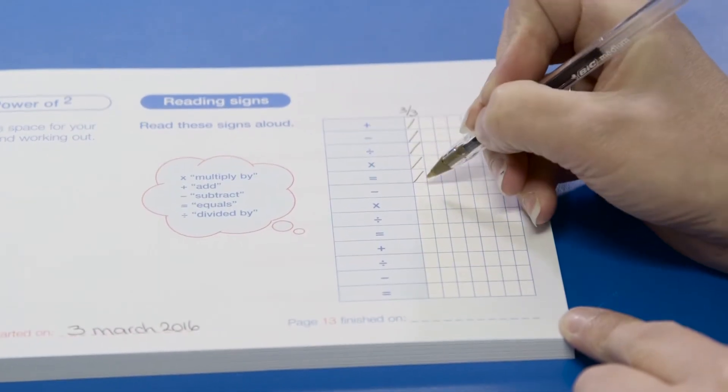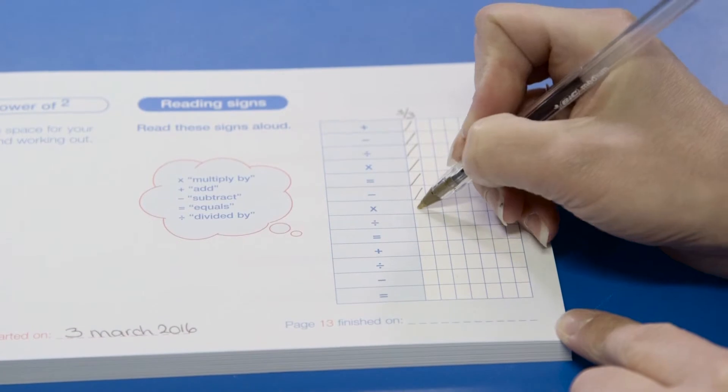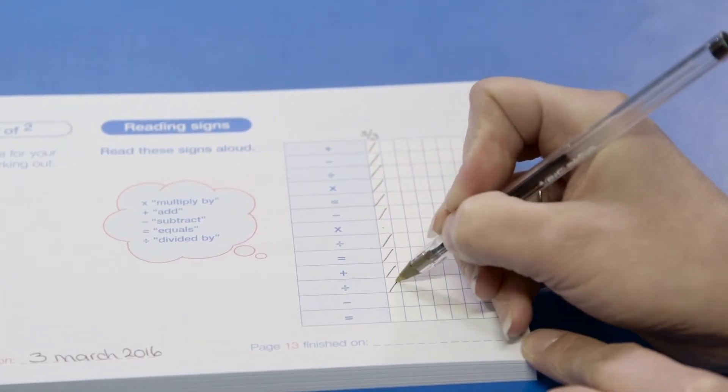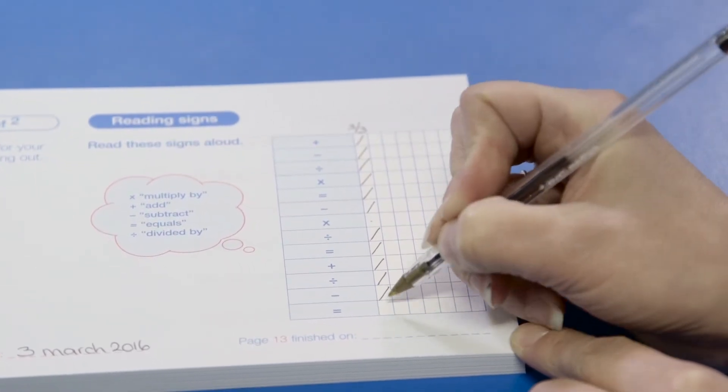When you've asked the last question on a page, move on to the next page. You should only complete one column on each page in a session. We recommend only doing one session each day lasting about 10 to 15 minutes.